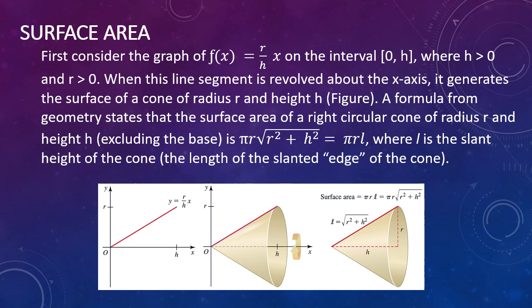When this line segment is revolved around the x-axis, it generates the surface of a cone of radius r and height h — again, see the figure below. A formula from geometry states that the surface area of a right circular cone of radius r and height h, excluding the base, is pi r times the square root of r squared plus h squared, which can be simplified to pi r l, where l is the slant height of the cone — the length of the slanted edge. You can see in the diagram that l equals the square root of r squared plus h squared, which is an application of the Pythagorean theorem.